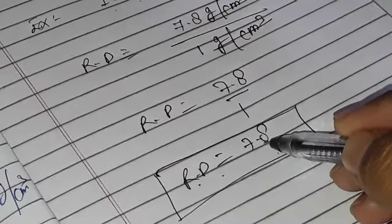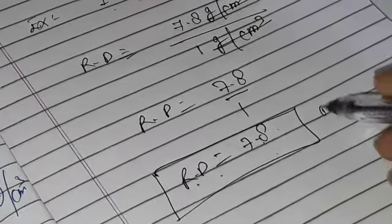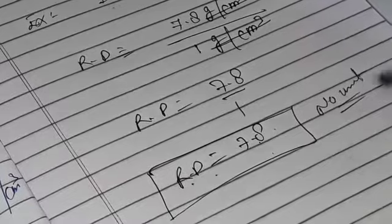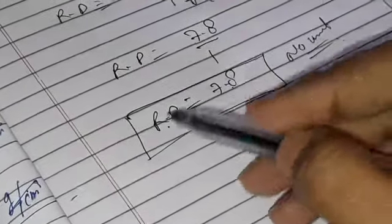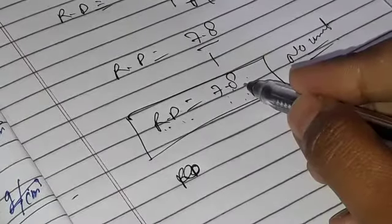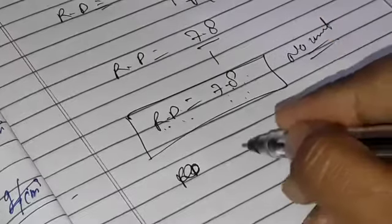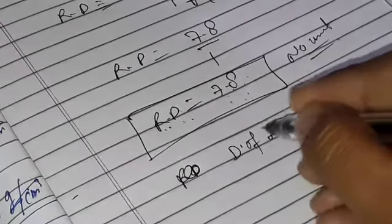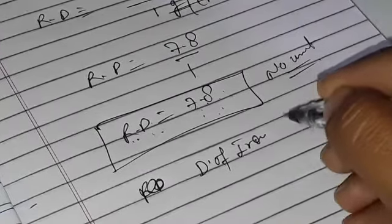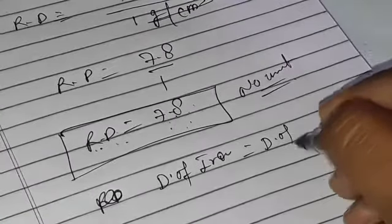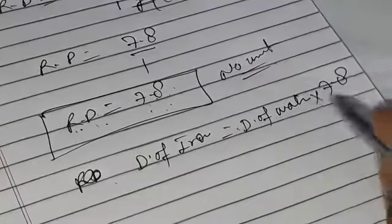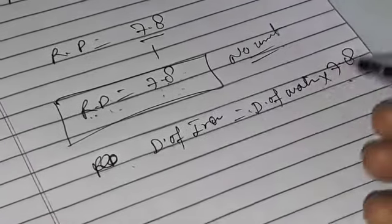Relative density is a number — a numeric value which has no unit. So if the relative density of iron is 7.8, that means the density of iron is 7.8 times more than water. This is the relationship between water and iron.